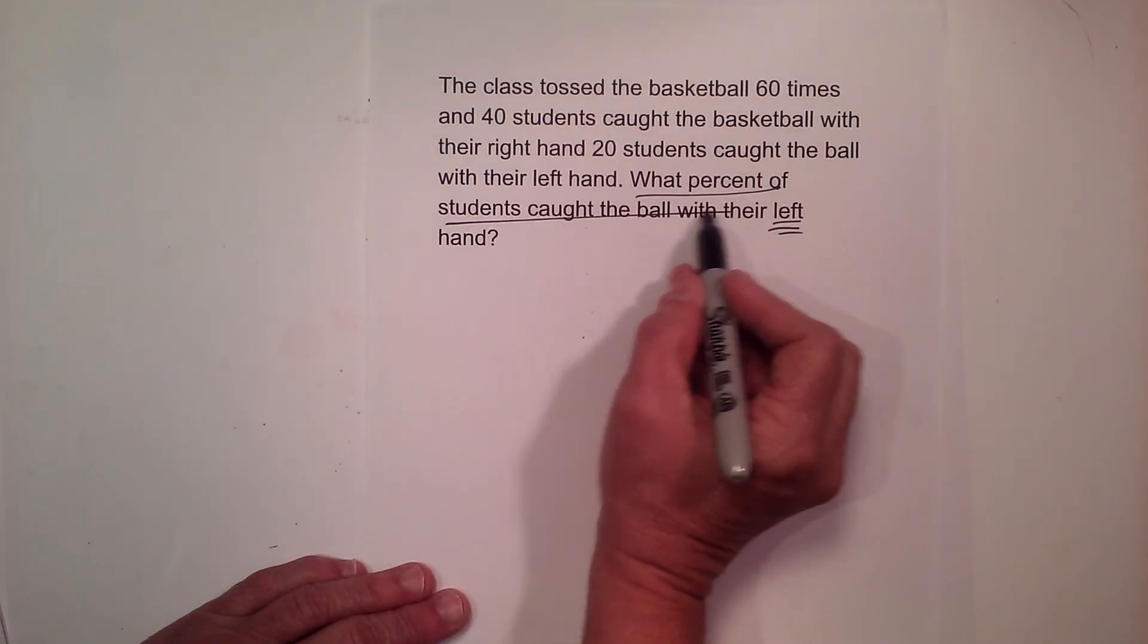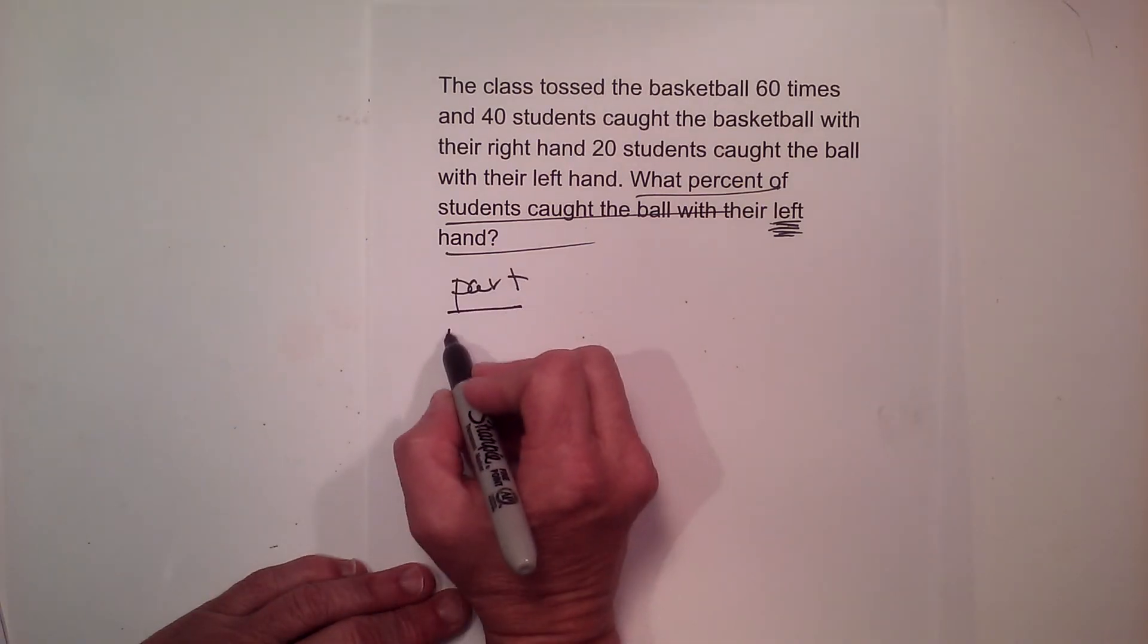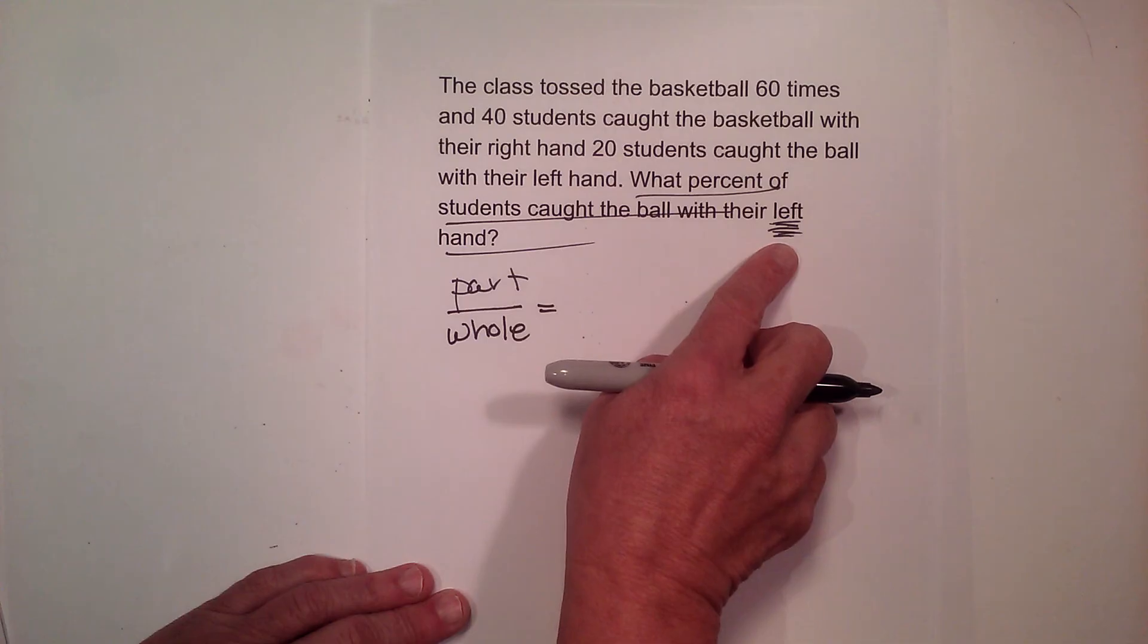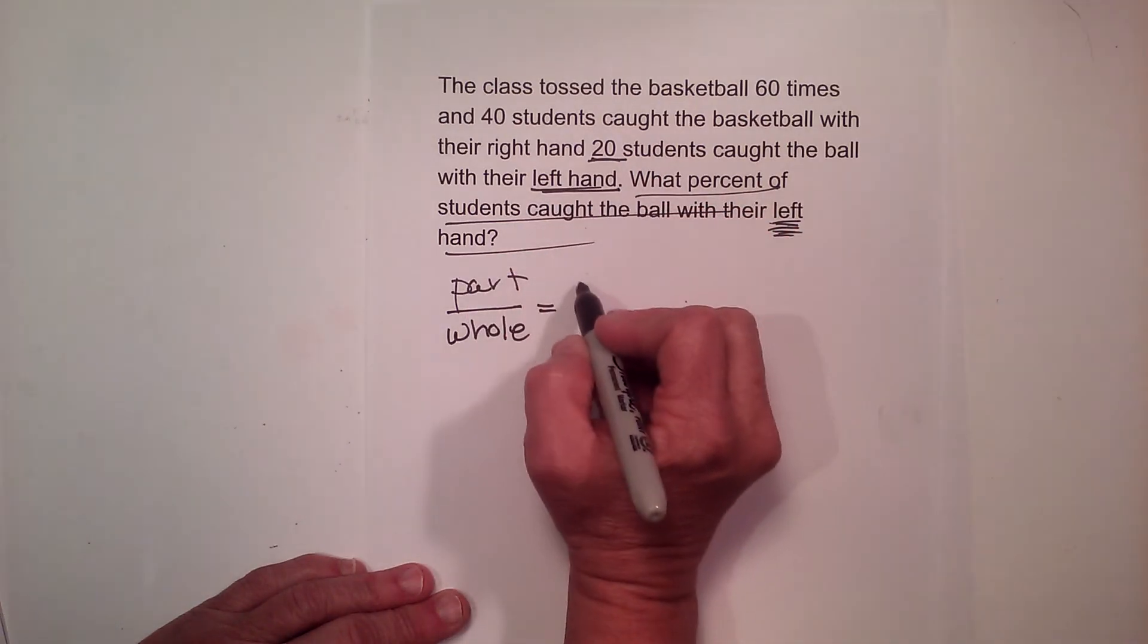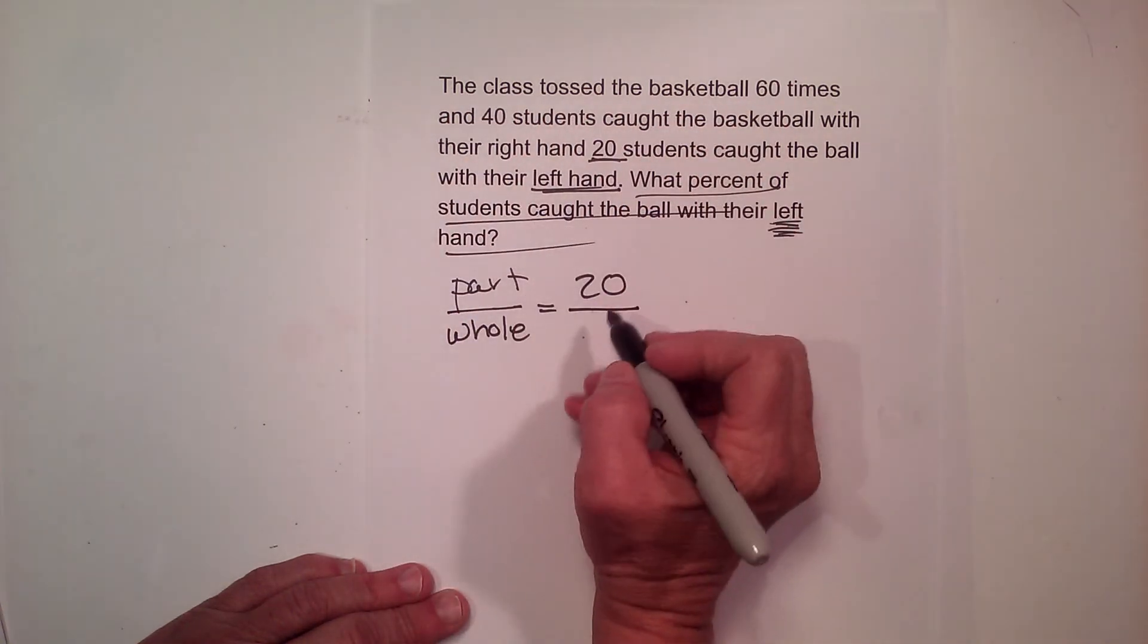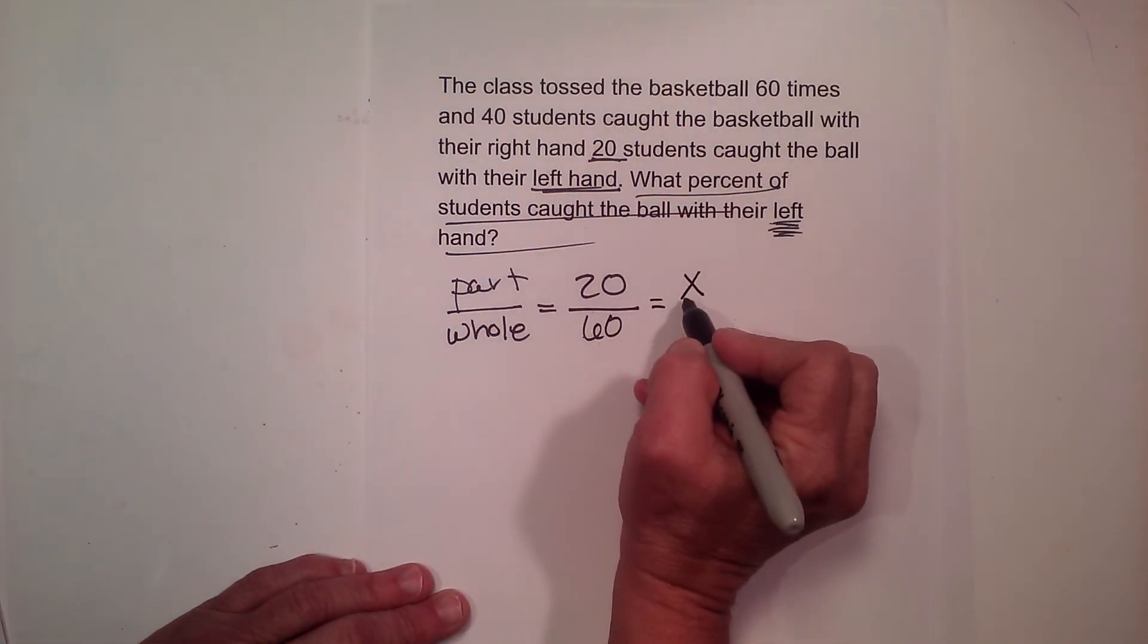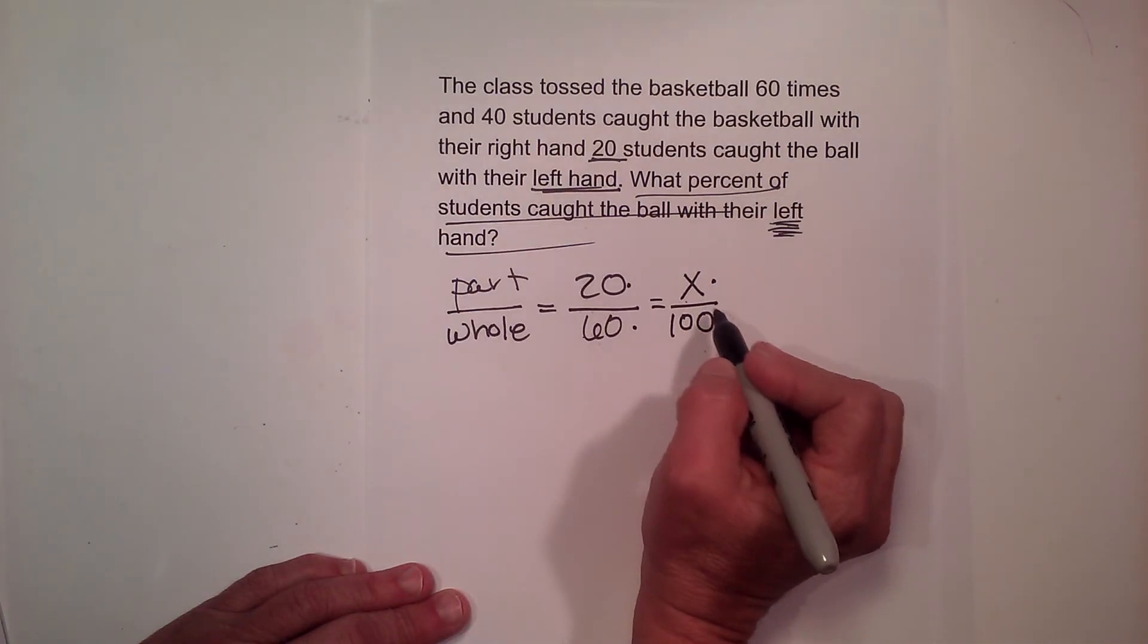So the question is asking me the percentage of lefties or left-handed catchers. So that's the part I want. So remember we're going back to part to whole. And you're going to look at the question to figure out exactly which part we're looking for. Well how many of our students caught it left-handed? 20 students caught the ball with their left hand, so 20 were left-handed. So that's my part. What's the whole? What were the total number of students or number of tosses I should say? The class tossed the basketball 60 times. So 60 is the number of tosses. And that's always equal to my x over 100 because it's part over whole equals percent over 100.